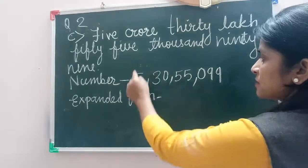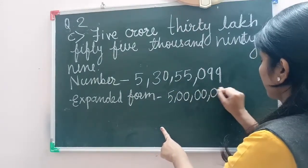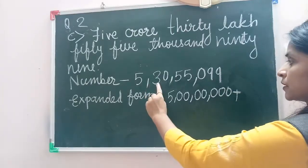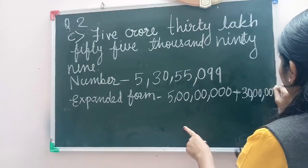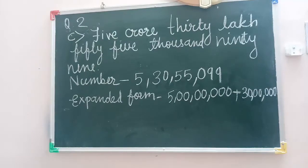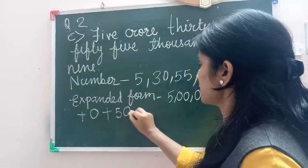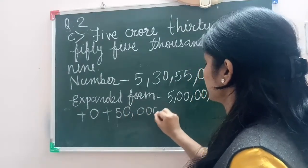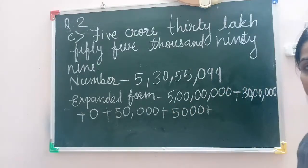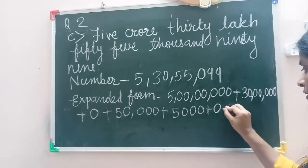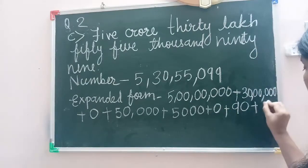The number multiplied by its place. 5 is at the crore place, so 5 crore. 3 multiplied by 10 lakh is 30 lakh. 0 multiplied by lakh is 0. 5 multiplied by 10,000 is 50,000. 5 multiplied by 1,000 is 5,000. 0 multiplied by 100 is 0. 9 multiplied by 10 is 90. And 9 multiplied by 1 is 9.